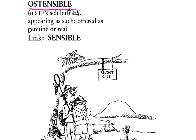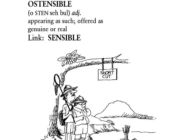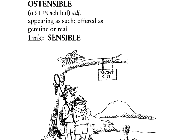Ostensible. Ostensible means appearing as such, offered as genuine or real. We will link it with the word sensible.